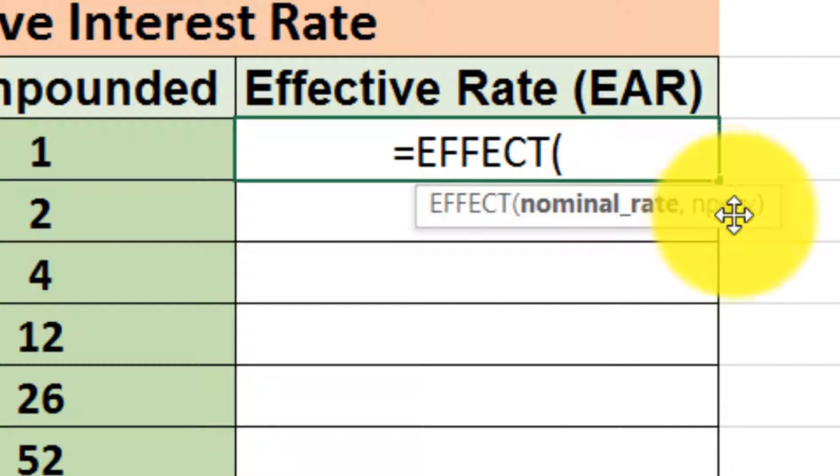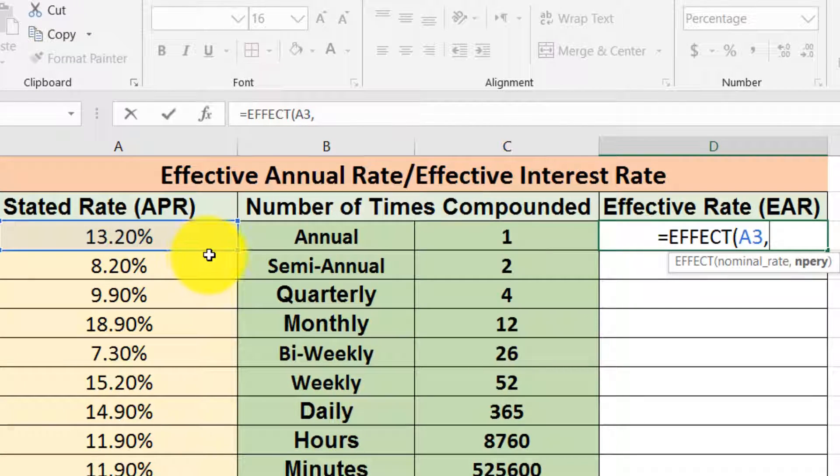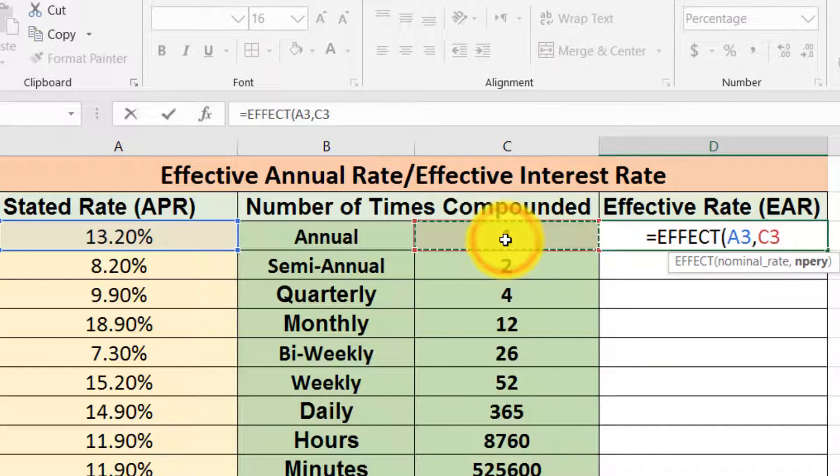In this case, the nominal rate here is 13.20%. The number of compounding per year is one in this case. Then I close the small bracket and press Enter.